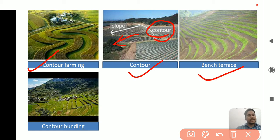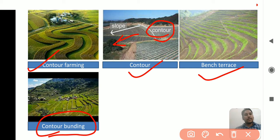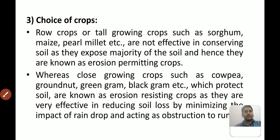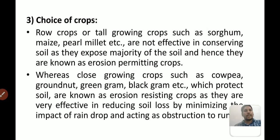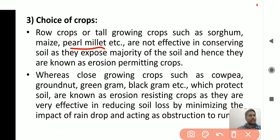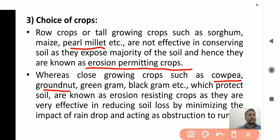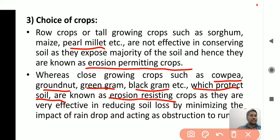Contour bunding involves cultivation with bigger contours and bunds also applied. Choices of crop: different crops are grown — like sorghum, maize, and pearl millet — which conserve moisture and are known as erosion-permitting crops. Other crops like cowpea, groundnut (also known as peanut), green gram, and black gram (also known as urad) are called erosion-resisting crops as they protect the soil.